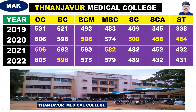Then, Thanjavur Medical College in 6th place. OC is 606, BC is 596, BCM is 598, MBC is 582, SC is 500, SCA is 456, ST is 464.